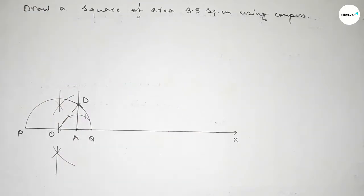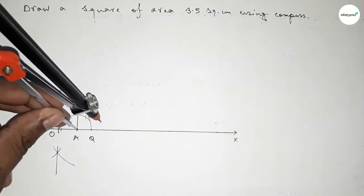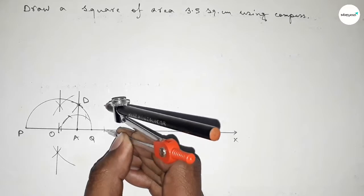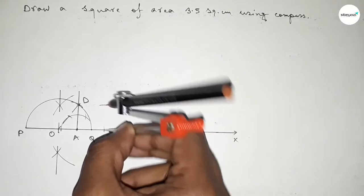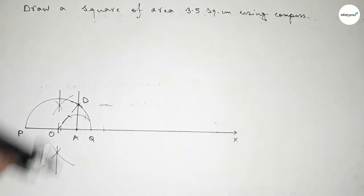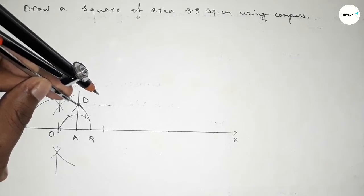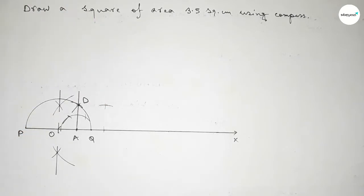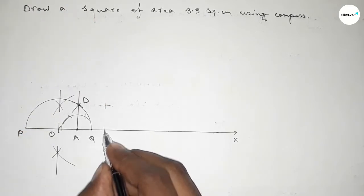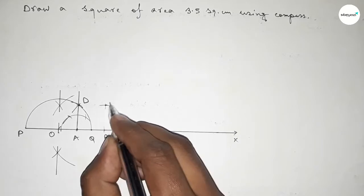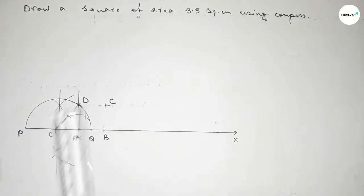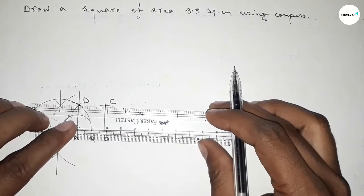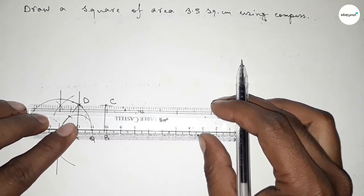Now taking the length AD equal to root 3.5 centimeters using the compass. Putting the compass on A and cutting an arc, then with the same length putting the compass at the next point and cutting again, and once more cutting here so both curves intersect at a point. Marking this as point B and the other as point C.